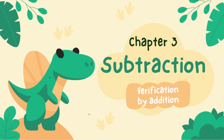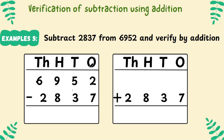So, let me teach you the first example. Subtract 2,837 from 6,952 and verify by addition. As I already told you, if there is a 'from' in the question, the second number goes in the first line and the first number in the second line. This is the first step.